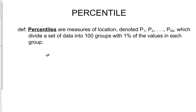Now we'll talk about percentiles. Percentiles are measures of location denoted P1, P2, all the way up to P99, which divide the set of data into 100 groups with about 1% of the values being in each of the groups.